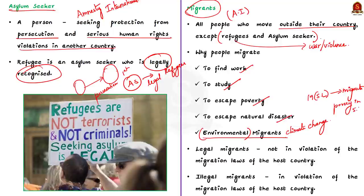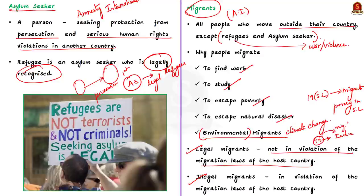Migrants can also be divided into two: legal migrants and illegal migrants. Legal migrants are people who are not in violation of the migration laws of the country to which they migrate. For example, if the 19 people from Sri Lanka do not violate India's migration laws, they are called legal migrants. Illegal migrants are those who are in violation of migration laws. Since illegal migrants lack legal documents, they are also called undocumented migrants.